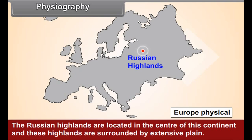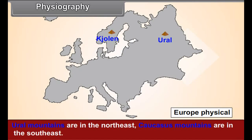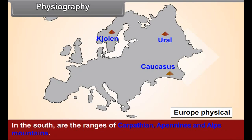Physiography. The Russian highlands are located in the center of this continent and these highlands are surrounded by extensive plains. In the northern part of the continent, Jolene Mountains are located. Ural Mountains are in the north-east. Caucasus Mountains are in the south-east. In the south are the ranges of Carpathian, Apennine and Alps Mountains.